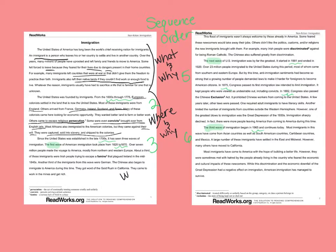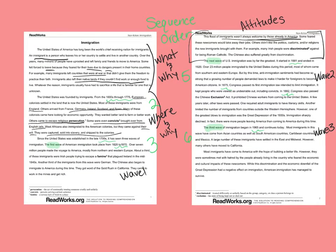Paragraph three goes into information about the first wave. Paragraph five gives us information about the second wave, and paragraph six is about the third wave. Paragraph four is more about attitudes or feelings of those already living in the United States, because immigrants weren't always welcomed, and it gives us reasons why — a little bit more of a descriptive type structure.